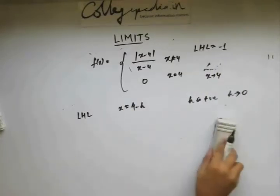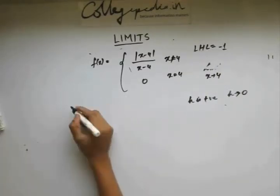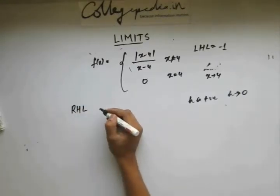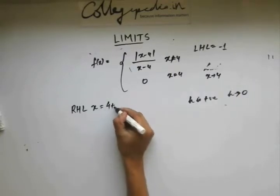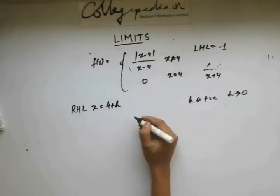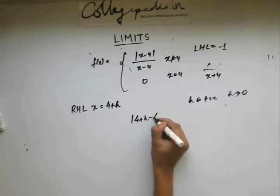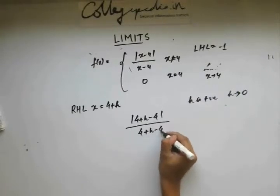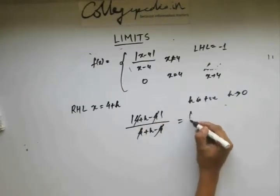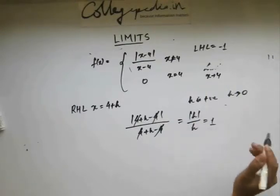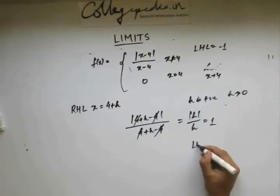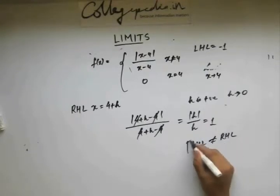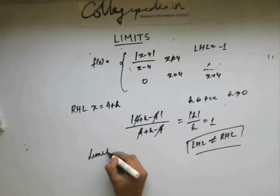Now let's find the right-hand limit. To find the right-hand limit, I'll take a value of x which is just more than 4, so let it be 4 + h. Again using this formula, the 4s get cancelled and I get |h| / h, which equals 1. So the left-hand limit and right-hand limit both exist, but the left-hand limit is not equal to the right-hand limit. Since these two are not equal, we say that the limit doesn't exist.